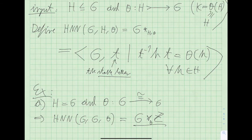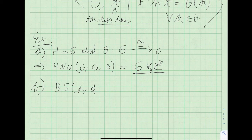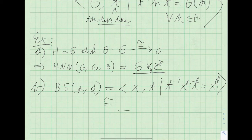So HNN extensions generalize semi-direct products by Z. There is a famous class of groups called Baumslag-Solitar groups, defined in terms of two integers P and Q. They are one-relator groups with the finite presentation having generators X and T, and the single relation that T conjugates X^P to X^Q.